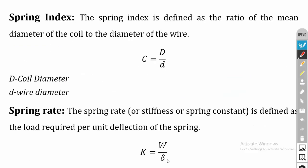The spring index (C) is the ratio of coil diameter (D) to wire diameter (d). If the spring index is not given in a problem, you can assume a value of 5, as most springs use a spring index of 5.